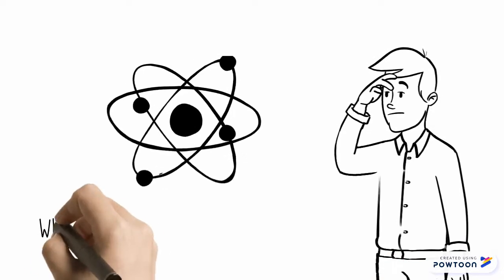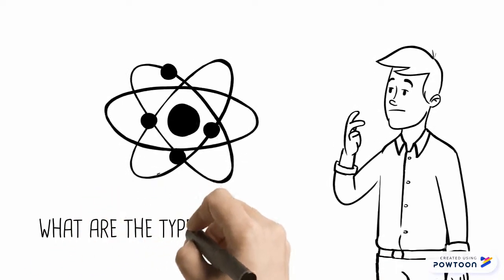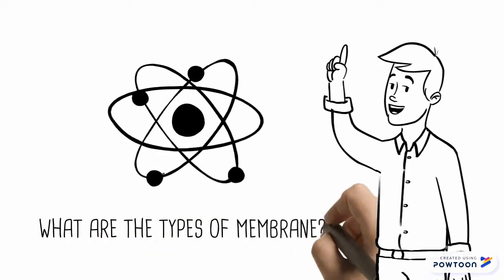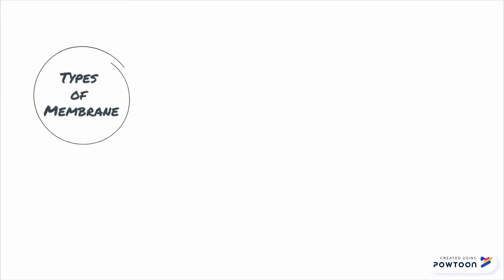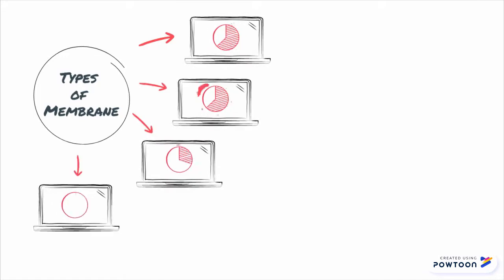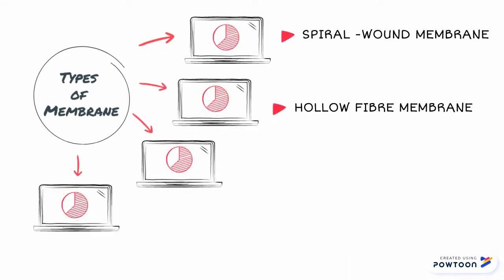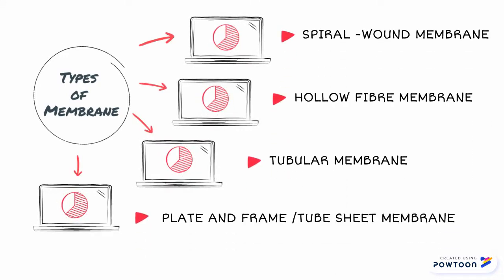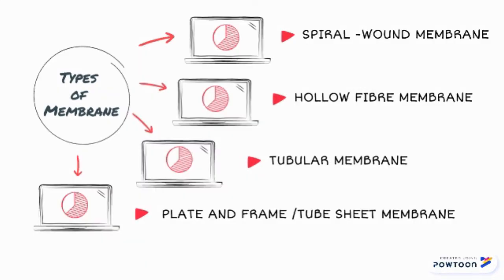There are four types of membranes commonly used in microfiltration: spiral wound membrane, hollow fiber membrane, tubular membrane, and plate and frame membrane, also known as tube sheet membrane.